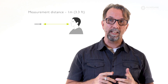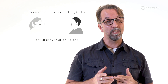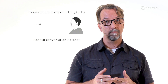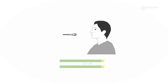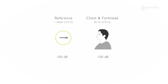We measure levels at 1 meter because this is considered normal conversation distance. If we measure levels closer to the sound source — in this case the mouth — the level increases dramatically. The level increases about 15 dB when we move to the chest or to the forehead, which are only 20 centimeters away from the sound source.